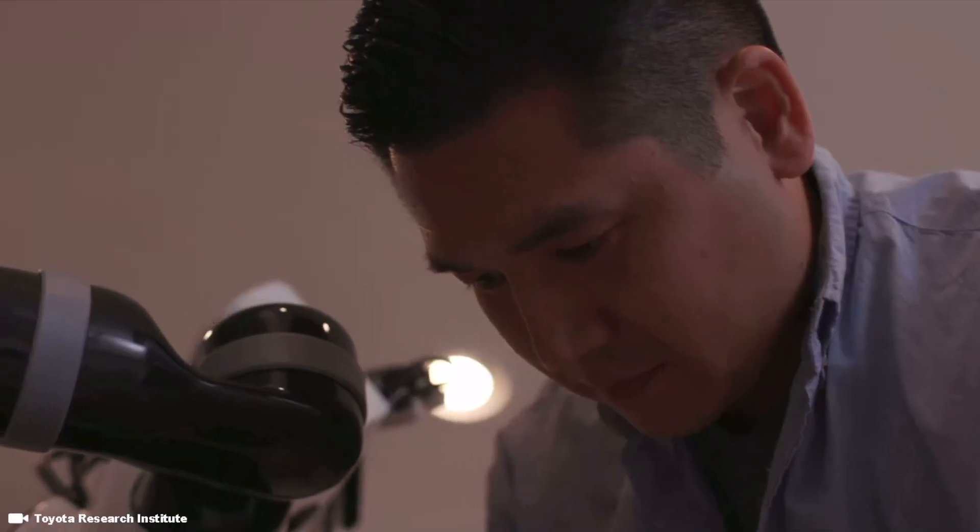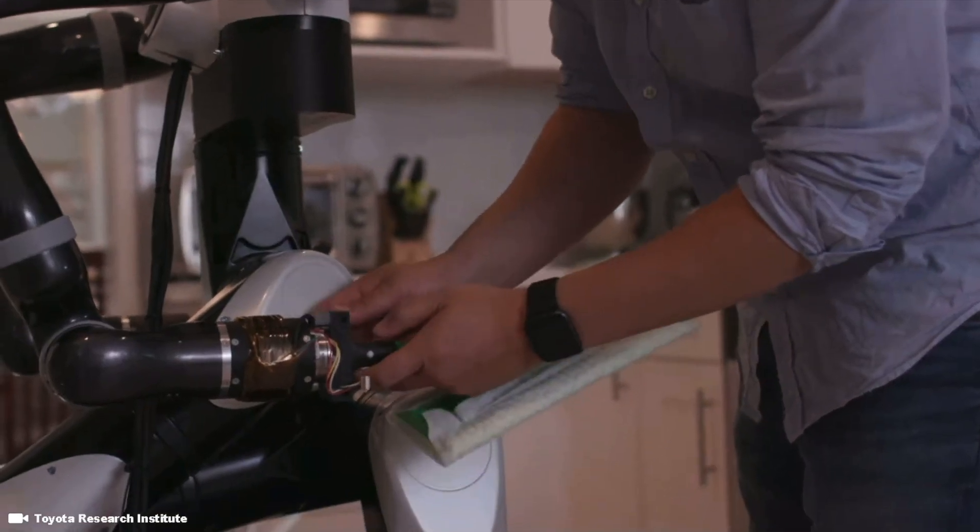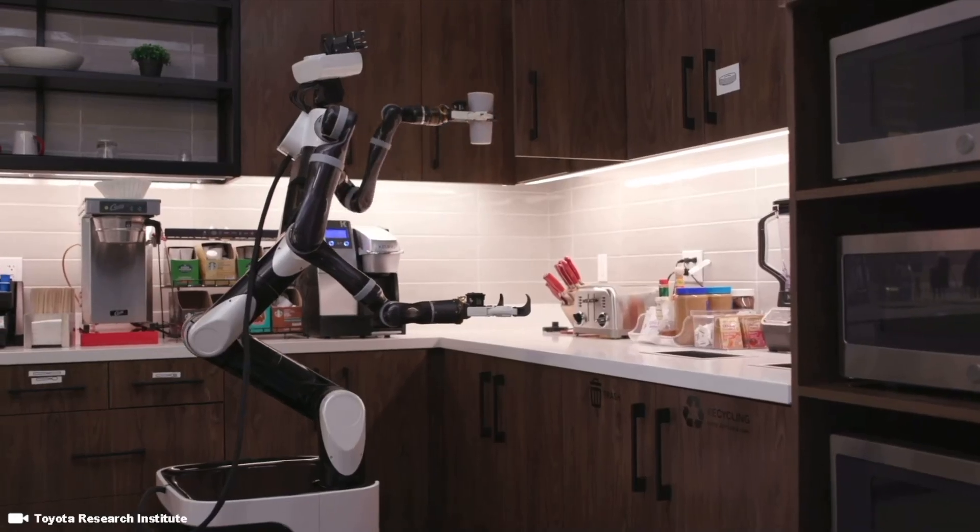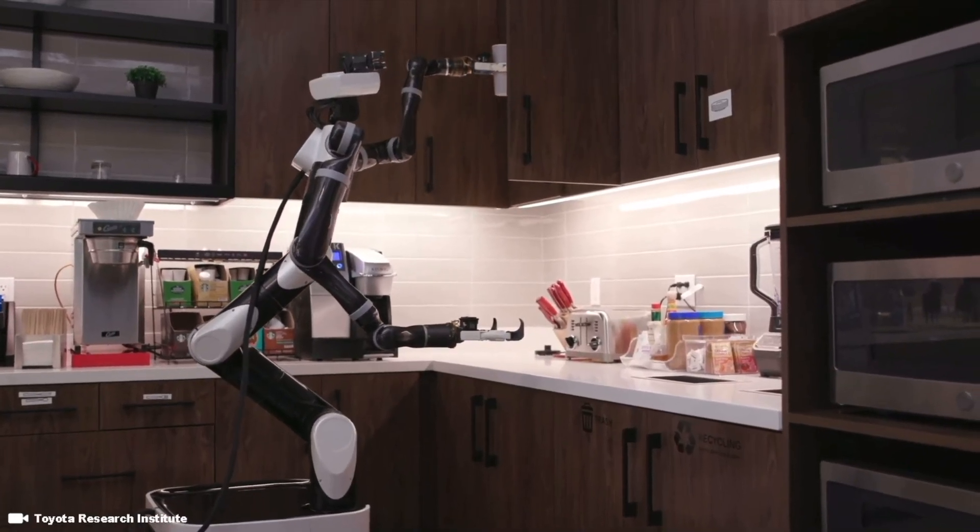Like simulation, we believe that teaching is a key capability that will enable robots to be useful in homes. We designed and built this robot with this type of teaching specifically in mind. It has many redundant degrees of freedom. It can move its body around like a person within a very large workspace.